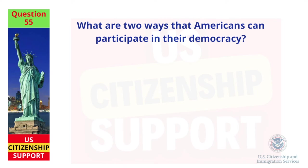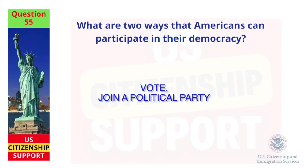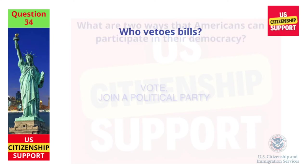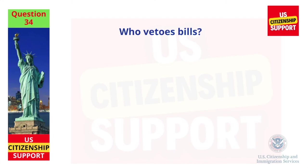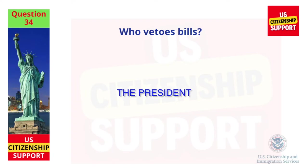What are two ways that Americans can participate in their democracy? Vote, and join a political party. Who vetoes bills? The president.